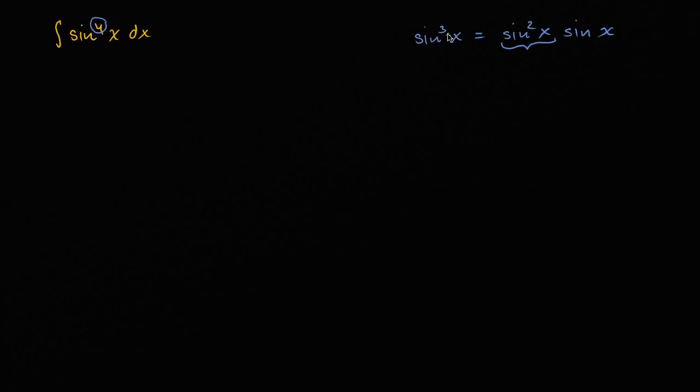You could have done this if it was cosine to the third of x as well, or to the fifth, or to the seventh, if you had an odd exponent. But here we have an even exponent, so what do we do?